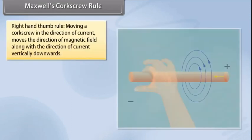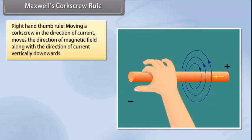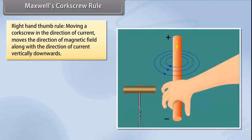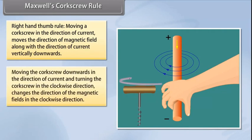Maxwell's corkscrew rule, also known as right-hand thumb rule, defines that moving a corkscrew in the direction of current moves the direction of magnetic field along with the direction of current vertically downwards. If we move the corkscrew downwards in the direction of current, and the handle of corkscrew is turned in the clockwise direction, then the direction of the magnetic fields is in the clockwise direction.